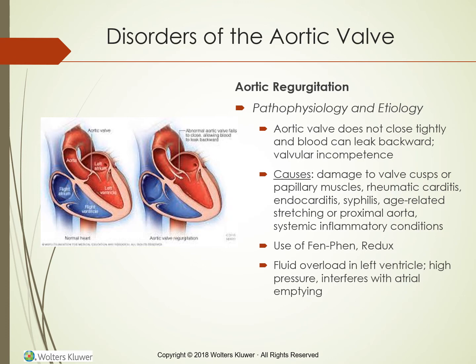When blood is pumped through the incompetent aortic valve, some leaks backward — valvular regurgitation — into the left ventricle. This backflow reduces cardiac output and causes fluid overload in the left ventricle, which becomes chronically stretched. High fluid pressure in the left ventricle causes the mitral valve to shut early, which interferes with left atrial emptying. Blood in the left atrium backs up into the pulmonary circulation. Left ventricular enlargement increases the heart's oxygen need. When coronary arteries cannot supply enough oxygen, the heart becomes ischemic and the client experiences chest pain, dizziness, shortness of breath on exertion, confusion, and left ventricular failure may develop.